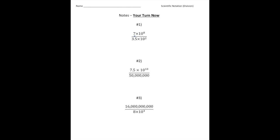Well, when I do 7 divided by 3.5, that gives us 2 times. And then 10 to the 8th divided by 10 squared is 10 to the 6th power. And there's the first one.